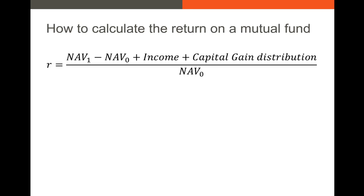So how do you actually calculate the return on a mutual fund? We generally use this formula. If you're trying to calculate the return on a mutual fund, you take the NAV, or net asset value, at the end of the period minus the net asset value at the beginning of the period, plus any income — so dividends or bond coupons that you receive as an investor — plus any capital gains distributions during the period of investment, and then divide all of that by the NAV at the start of the period.